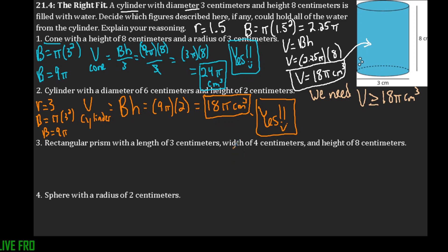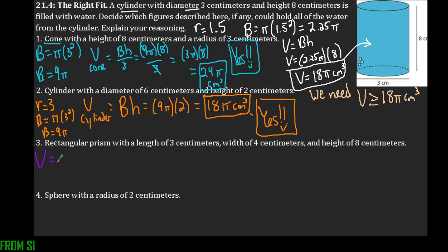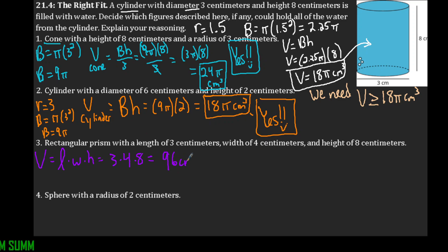Number three: a rectangular prism with length 3, width 4, and height 8. The volume of a prism equals length times width times height: 3 times 4 times 8 equals 96 cubic centimeters. This is also a yes.